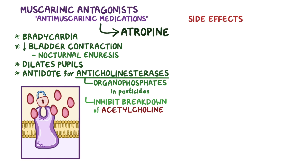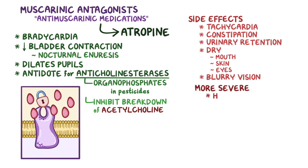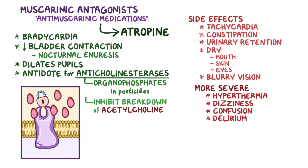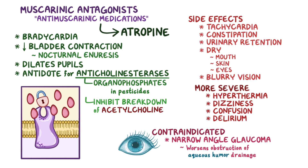For side effects, atropine can produce tachycardia or increased heart rate, constipation and urinary retention, dry mouth, skin, and eyes, and blurry vision. The more severe side effects include hyperthermia, dizziness, confusion, and delirium. It is also contraindicated in individuals suffering from narrow-angle glaucoma, since it can worsen the obstruction of aqueous humor drainage.